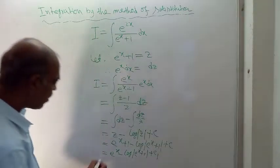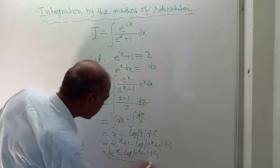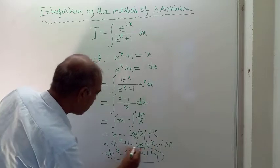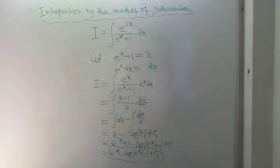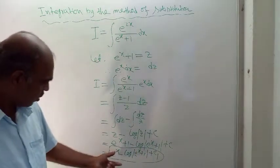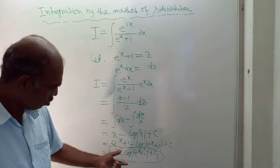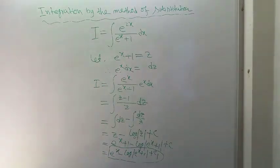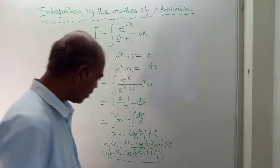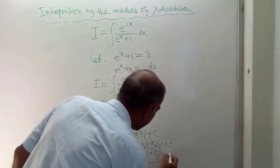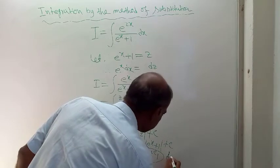This is the final result — the solution of the given problem. Let me check that the lower line is visible. Yes, it is visible. So this is the final answer.